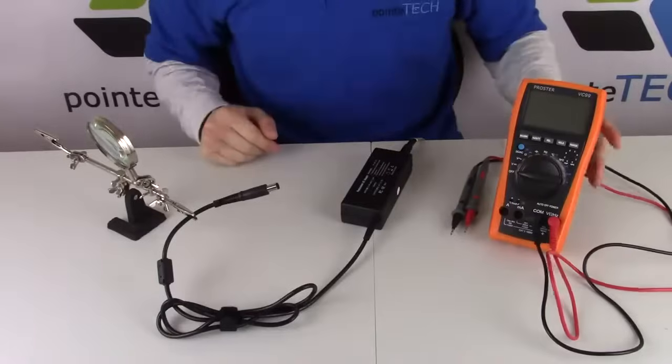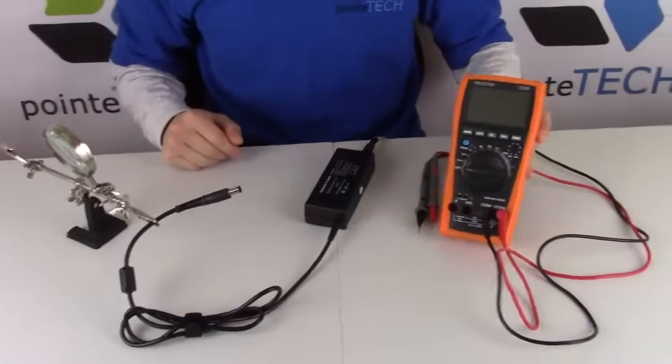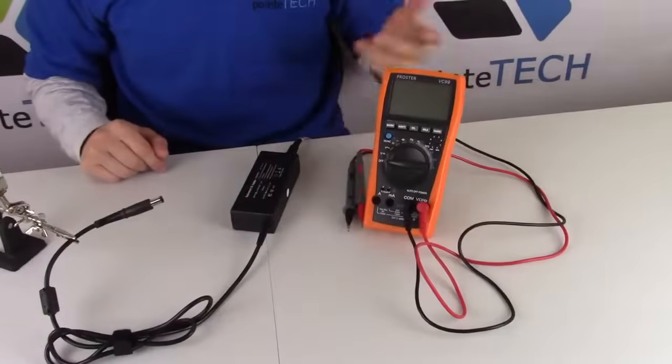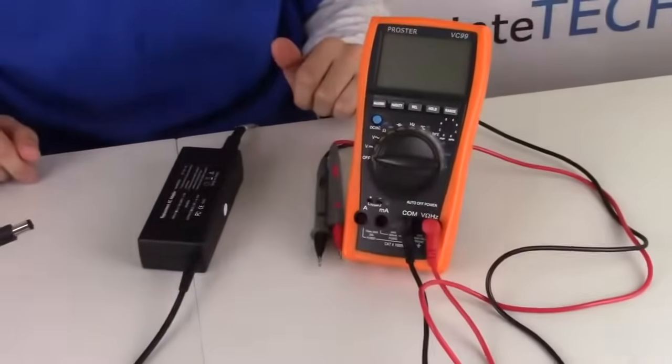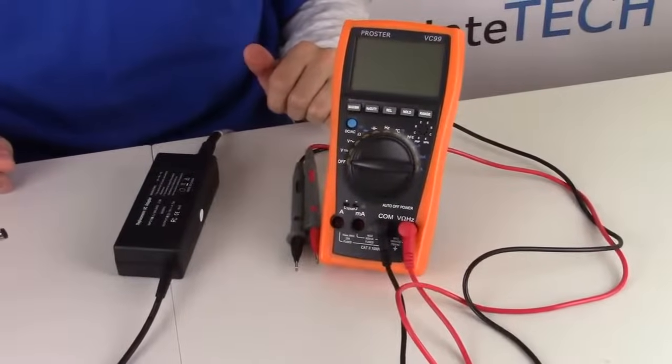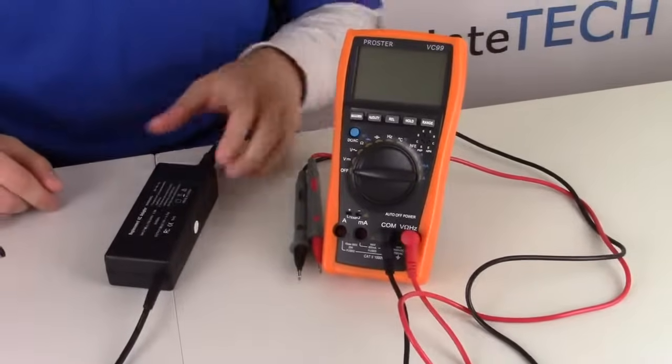So in order to do this, you're going to need a multimeter. This is one that we're going to show you in the video. We bought this on Amazon for around $30, so they're not very expensive. And I'll show you how to set this.